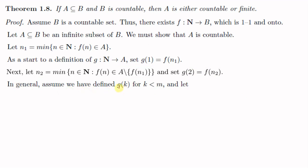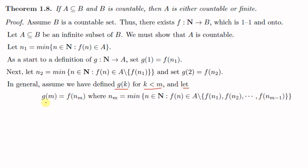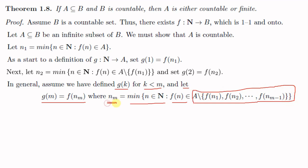In general, assume that we have defined g(k) for k less than m, and we shall define g(m) as g(m) equal to f(nm), where nm equals the minimum of the set of all n in N such that f(n) is an element of A minus {f(n1), f(n2), ..., f(n_{m-1})}. That means nm is the minimum value of n for which f(n) is an element of A minus {f(n1), f(n2), ..., f(n_{m-1})}.